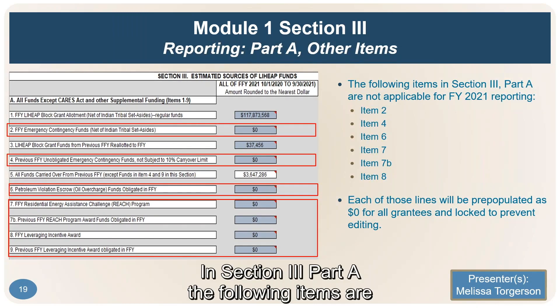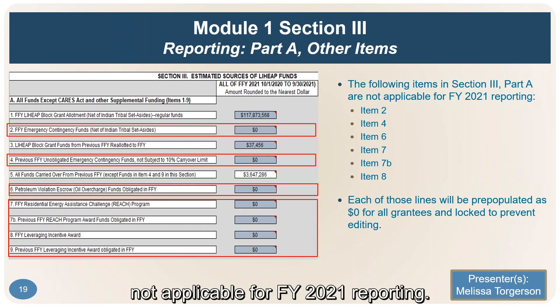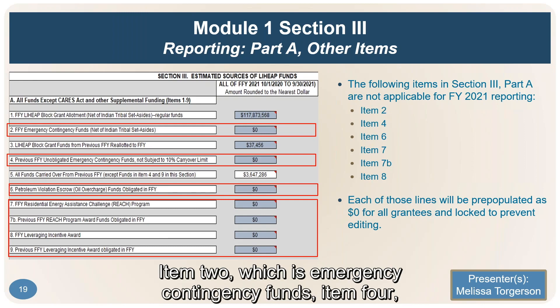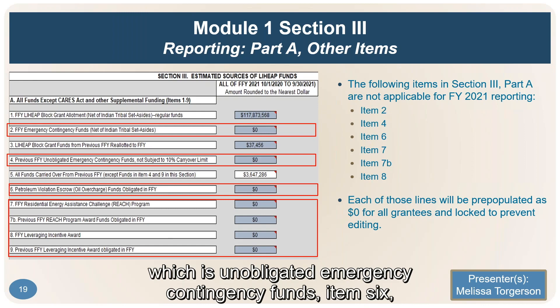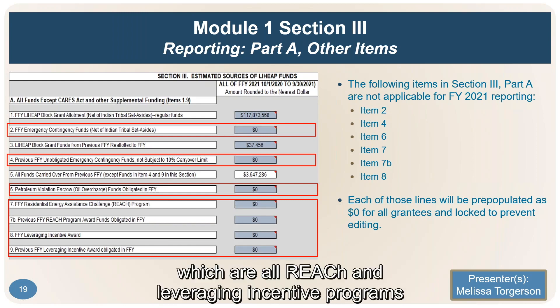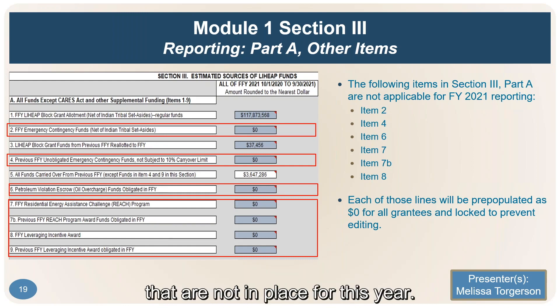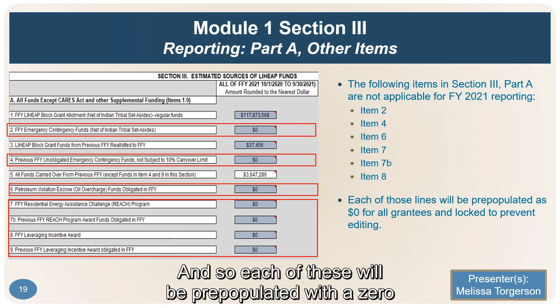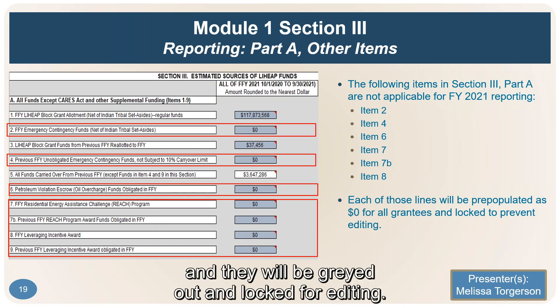In Section 3, Part A, the following items are not applicable for FY 2021 reporting: Item 2, emergency contingency funds; Item 4, unobligated emergency contingency funds; Item 6, oil overcharge funds; as well as Items 7, 7B, and 8, which are reach and leveraging incentive programs not in place for this year. Each of these will be pre-populated with a zero and grayed out and locked for editing.